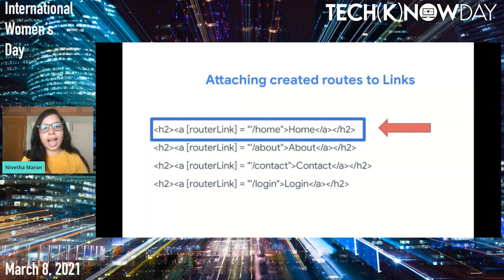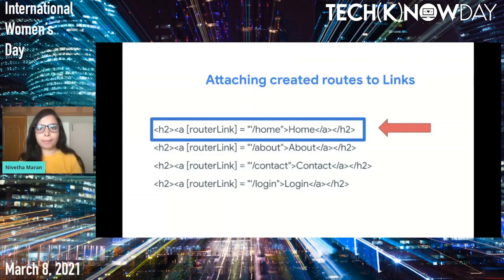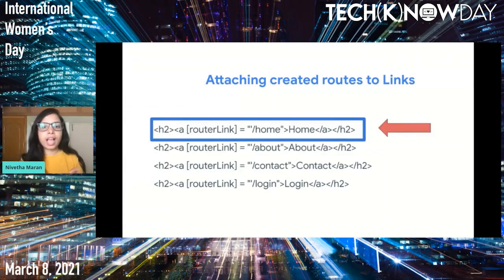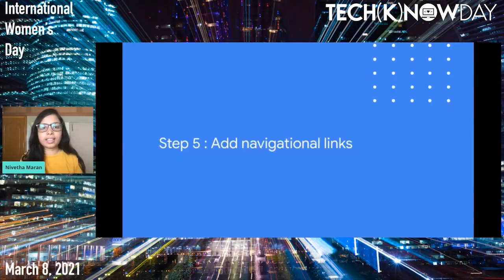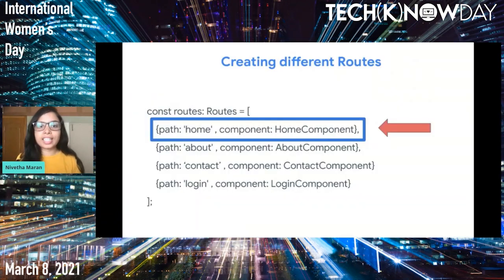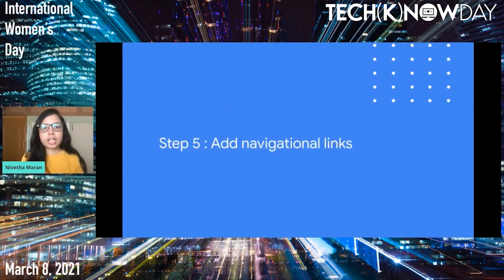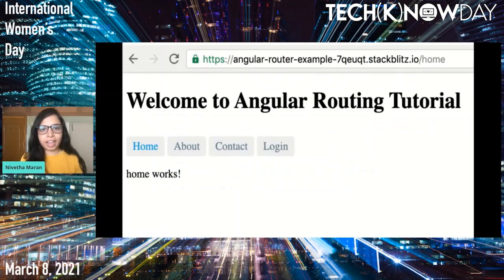Finally, we add navigational links to our app template using the routerLink directive. Open src/app/app.component.html and add the following code on top of the router outlet, passing different paths for each router link — for example, '/home' for the home link and corresponding paths for each page. Note that these paths must match the path values defined in the routes array in the routing module file.